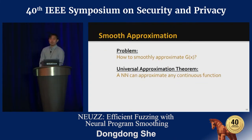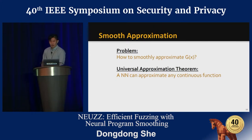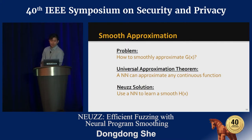Gradient-guided optimization seems pretty promising, but the problem is how do we smoothly approximate g(x), whose objective function has no explicit analytical form. Moreover, it is only accessible in a black-box manner—we can only get the edge coverage output of g(x) through lightweight instrumentation of the target program. According to the Universal Approximation Theorem, a single hidden layer neural network model can approximate any continuous function. Thus, the neural network is a natural fit for this task. Our solution is to use a neural network model to smoothly approximate g(x), and our learned function is h(x).